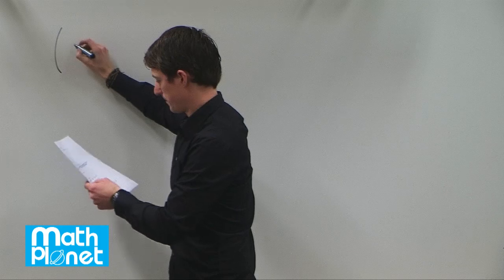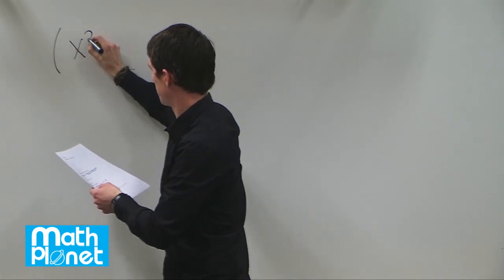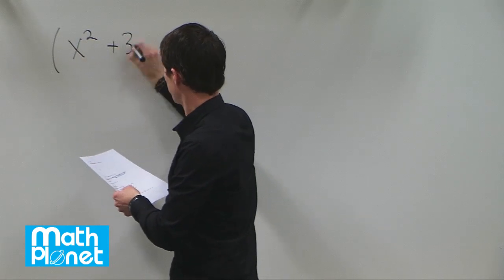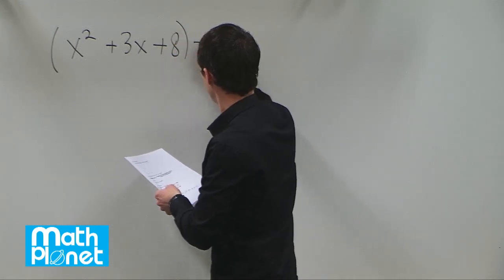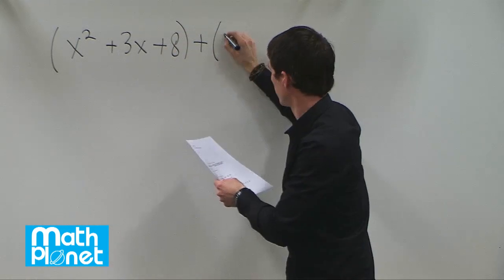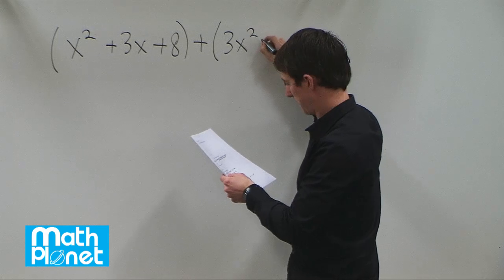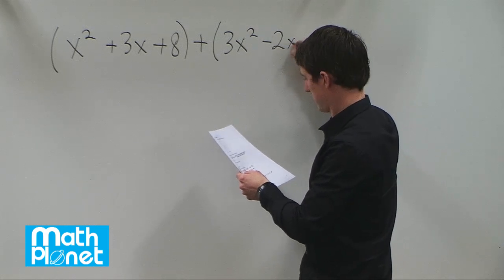The first polynomial is x squared plus 3x plus 8. We're going to add that to the polynomial 3x squared minus 2x plus 4.